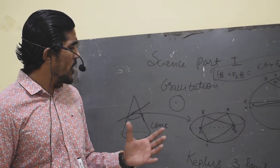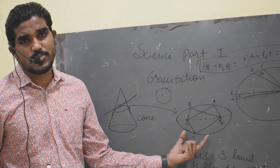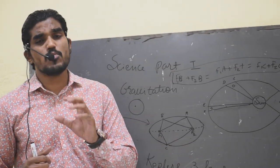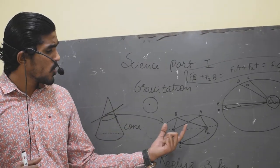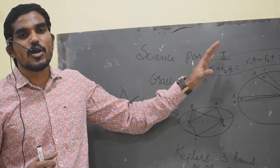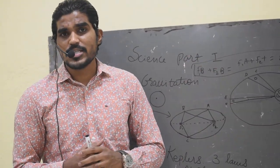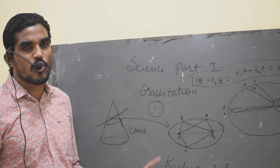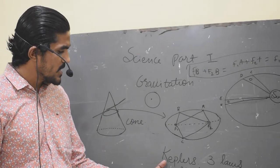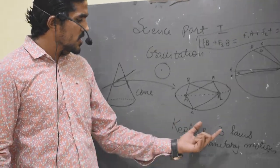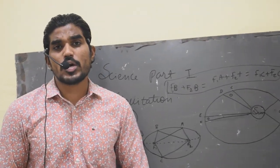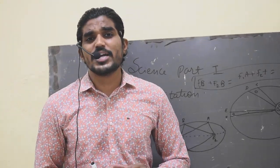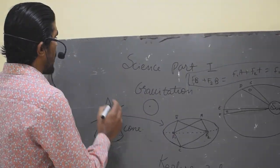So what we have understood here is: what is ellipse? Ellipse has two focal points, and the sum of the distances of the two focal points from any point on the curve is always constant. The most important thing is that ellipse has two focal points. Now let's come back to our concept — Kepler's three laws of planetary motion.